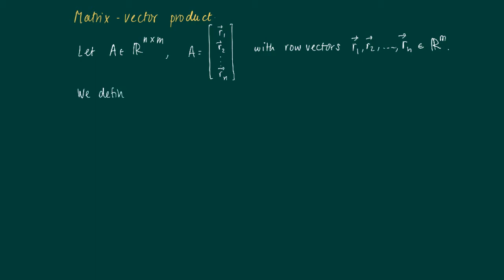Now let's define for a column vector. Column vector x with dimensions m times 1, so m components.